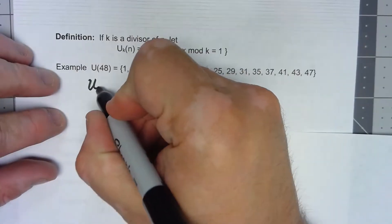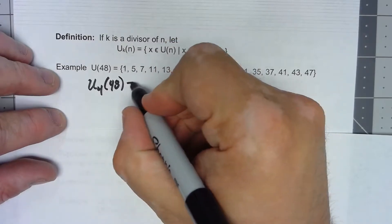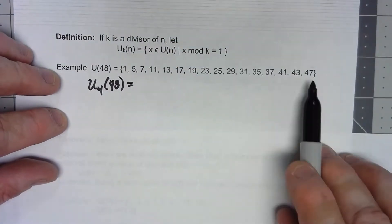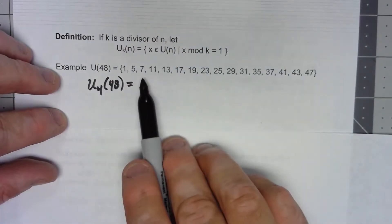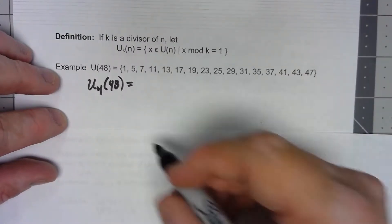So let's take a look at U_4 of that 48 U group. So we're taking all the elements in here mod 4 and the ones that come out to be 1 go into this group.